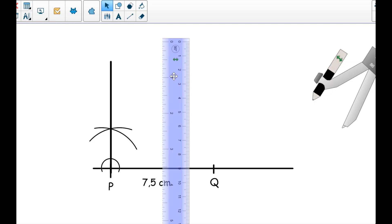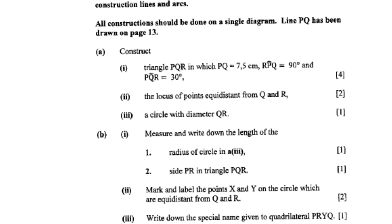So this is my 90 degrees. Now let's check for angle PQR. It's 90 degrees and angle PQR at Q we are going to construct 30 degrees.